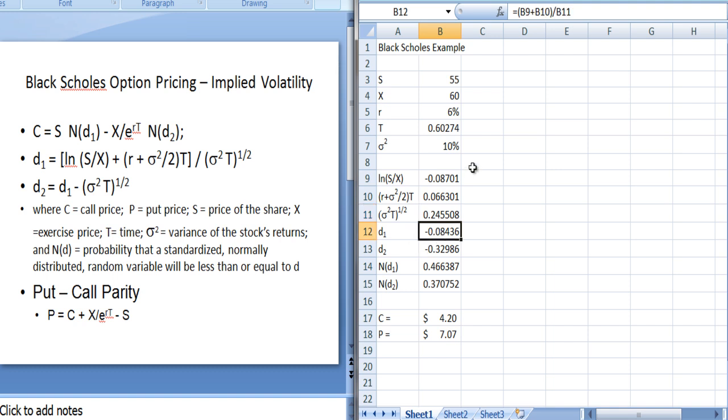To calculate D1, it's just going to be B9 plus B10 divided by B11. That's what the formula is here. And D2 is just going to be D1 which is in cell B12 minus what's in cell B11. And then N(d1) uses this normal standard distribution function. And you can get it by clicking the drop down menu or you can just type equals norm.s.dist and then put D1 in there and the same with D2.